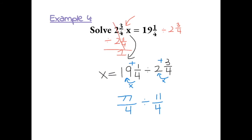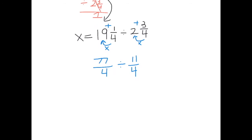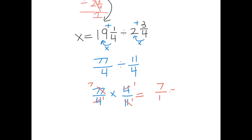To divide these fractions, we use keep-change-flip: keep the first fraction, change division to multiplication, and flip the second fraction. Then we cross-simplify: 4 divided by 4 simplifies to 1, and 77 and 11 can both be divided by 11, giving 7 over 1. Now we multiply: 7 times 1 is 7, and 1 times 1 is 1, so this equals 7. Therefore, x equals 7.